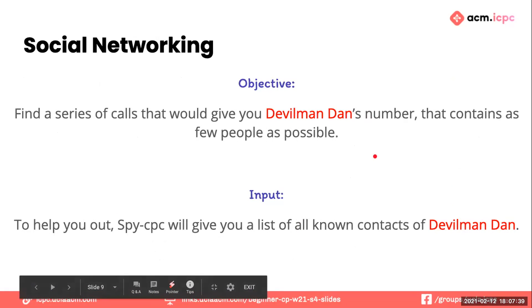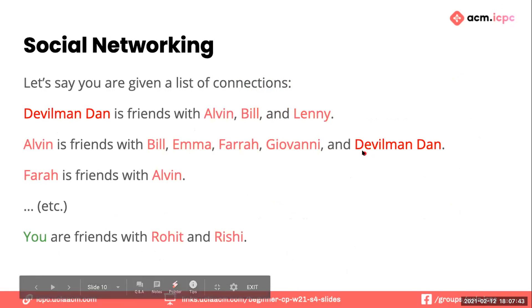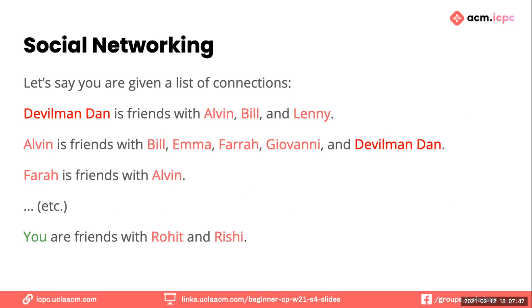Your objective is to find a series of calls that will give you Devilman Dan's number using as few people as possible. SpyCPC will give you a list of all known contacts. Devilman Dan is friends with Alvin, Bill, and Lenny. Alvin's friends with Bill, Emma, Farah, Giovanni, Devilman Dan, et cetera. You're friends with Rohit and Rishi. This list is great, but it's difficult to see the connections. We want to know the least number of people you need to contact to get to Devilman Dan.